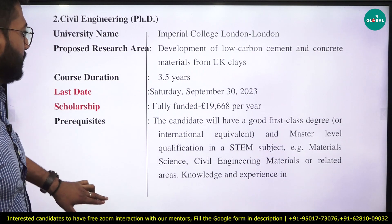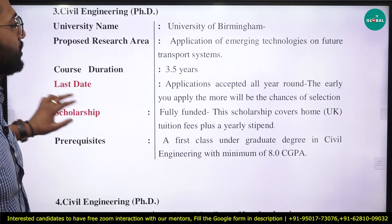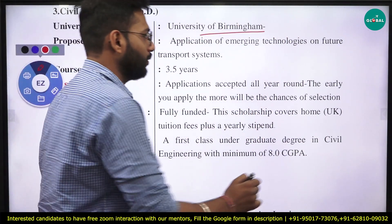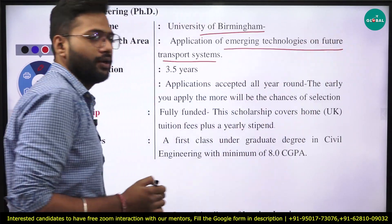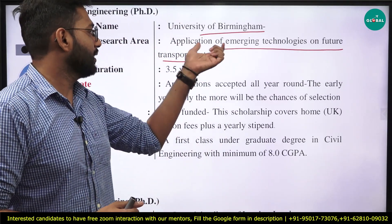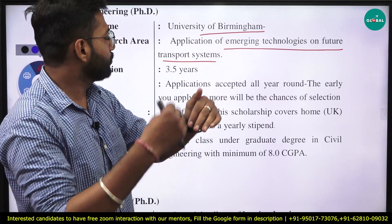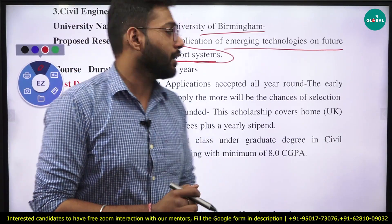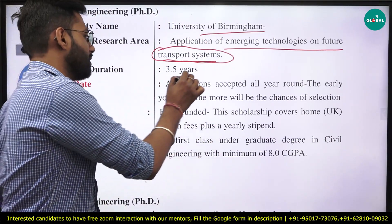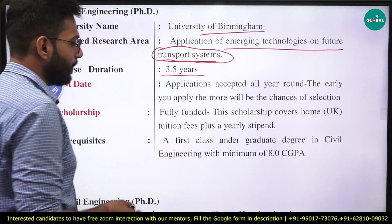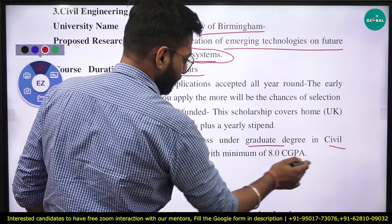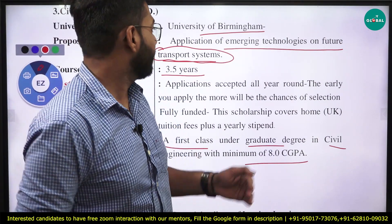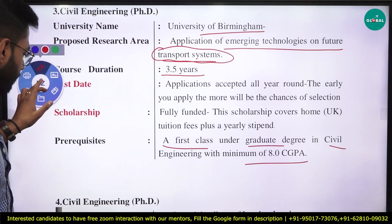The third university is the University of Birmingham. The research area here is the application of emerging technologies on future transport systems — specifically, planning and modeling of future transportation systems. The course duration is 3.5 years, and the prerequisites are a first-class undergraduate degree in civil engineering with a minimum CGPA of 8.0. For more details, visit the University of Birmingham website.